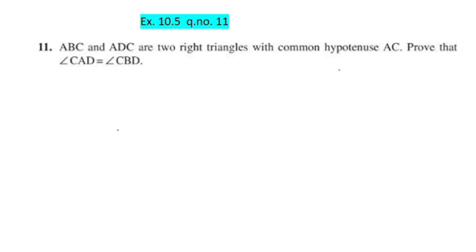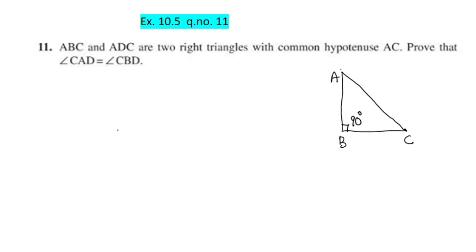We are going to draw triangle ABC. This is triangle ABC where angle B is a right angle, so angle B is 90 degrees. Now we are going to draw triangle ADC, where AC is common, and angle D is 90 degrees.